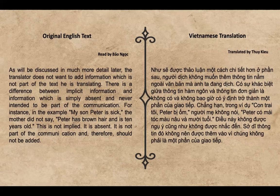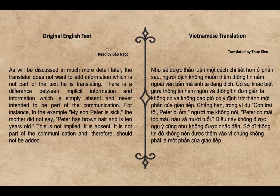Như sẽ được thảo luận một cách chi tiết hơn ở phần sau, người dịch không muốn thêm thông tin nằm ngoài văn bản mà anh ta đang dịch. Có sự khác biệt giữa thông tin hàm ngôn và thông tin đơn giản là không có và không bao giờ có ý định trở thành một phần của giao tiếp. Chẳng hạn, trong ví dụ 'con trai tôi Peter bị ốm,' người mẹ không nói Peter có mái tóc màu nâu và 10 tuổi — điều này không được hàm ý cũng như không được nhắc đến, và do đó thông tin đó không nên được thêm vào.